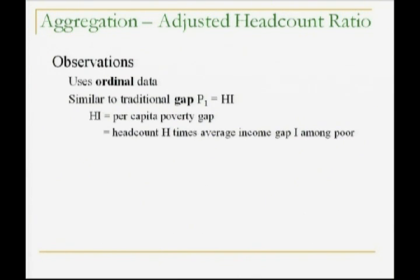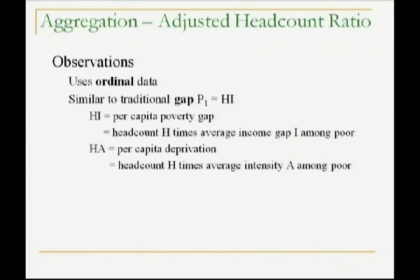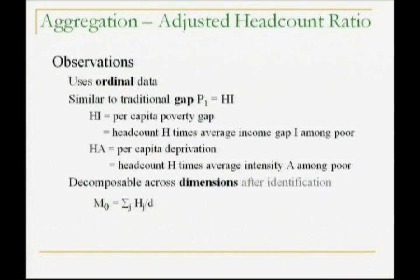M0 uses ordinal data. Second, it's very similar to the traditional poverty gap H times I, except now it's H times A — so the intuition is clear. That's now our measure of intensity: not depth intensity, but breadth intensity. Third, it's decomposable across dimensions. After you've identified who's poor, you can say how much each variable was responsible — like a source decomposition in inequality analysis. The formula is simple: you take H_j, the percentage of people who are poor and deprived in dimension j, divide by D with equal weights, and average up. That is the overall M0 indicator — a very powerful extension of the decomposability we've seen in unidimensional analysis.